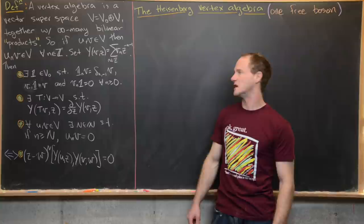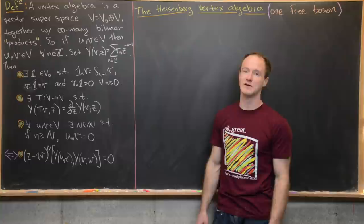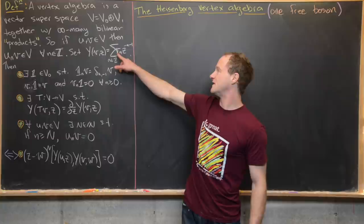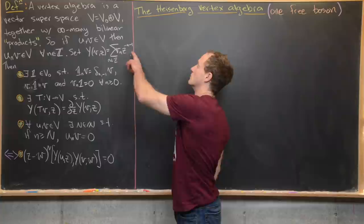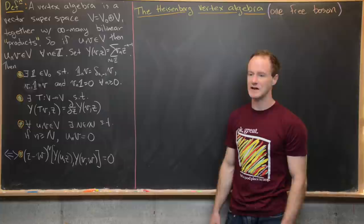We want something called a vertex operator, which bundles all of those infinitely many products into one object. We use the notation Y(V, Z), where Z is a formal variable, so we've got the sum over all integers of V_n Z to the minus n minus one. If you multiply that onto another vector U, you get a formal power series containing all the information of the ways of multiplying V with U.